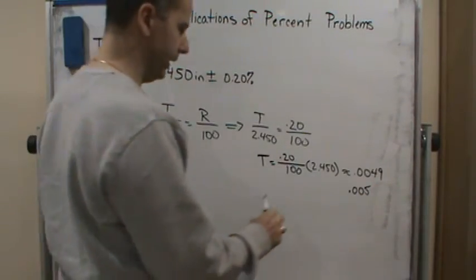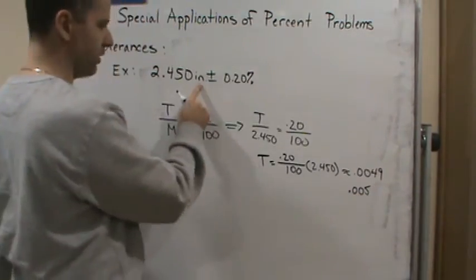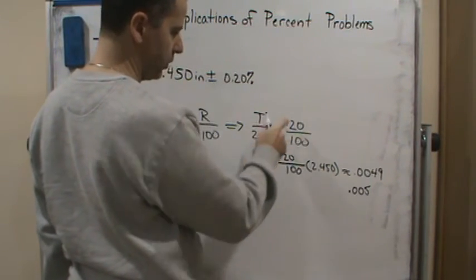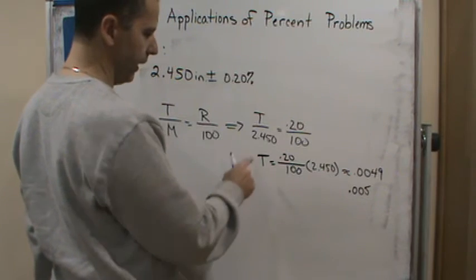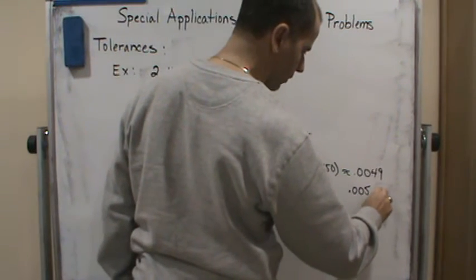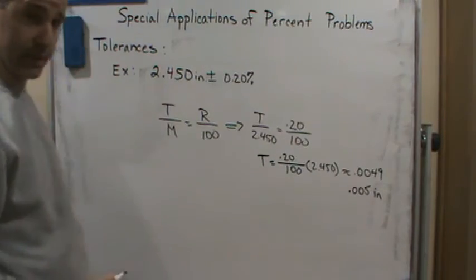And this is going to be, what's the units? The units are going to be inches, because I've got percentages over percentages, which drops out, so the percentages are going to go away, and this is in inches. So my final answer is going to be in inches, so the dimensional analysis works out.